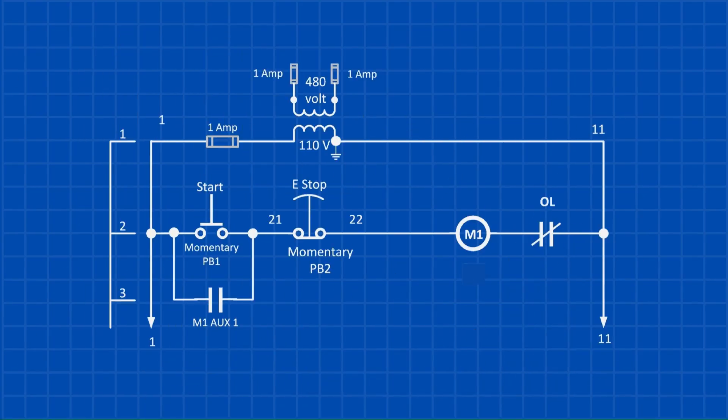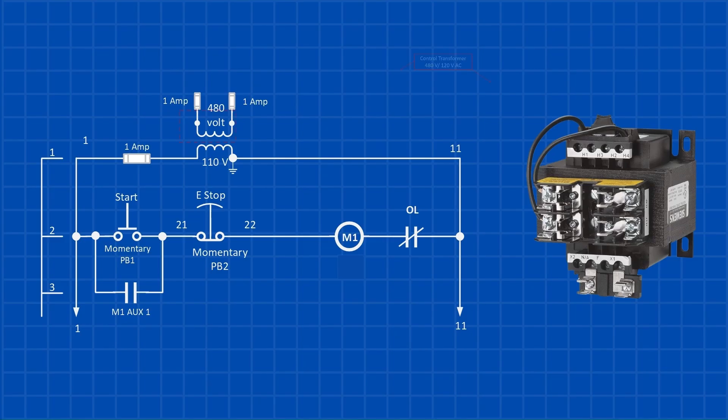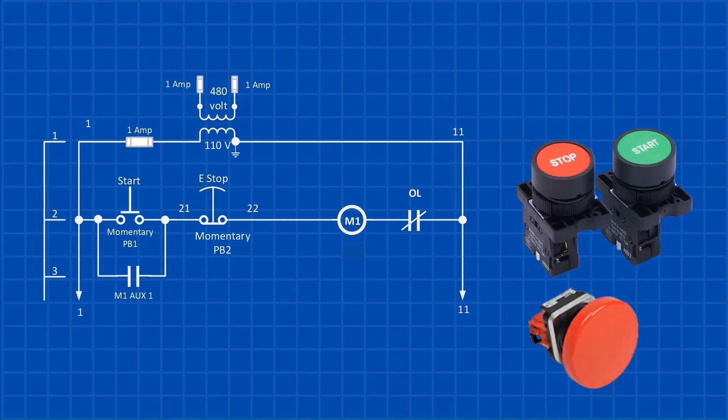Now let's take a look at the control circuit for our 30-horsepower motor. In its simplest form, the motor control circuit will look like this. The first component in our control circuit is the control transformer, which has primary and secondary fuses. It steps down the voltage from 480 volts to 120 volts AC, supplying power to the entire control circuit. The next set of components includes the momentary start and stop buttons. Notice the term momentary. This means the buttons are only active while being pressed. Once you release them, they return to their normal state.